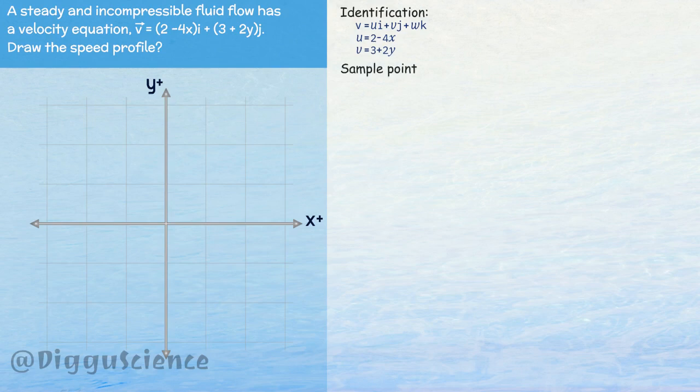The next stage is to determine the sample points. The easiest point is the center coordinate. Then the velocity component on the x-axis u of 0 is equal to 2 minus 4 times 0, this value is equal to 2 meters per second.